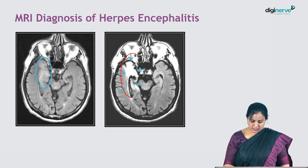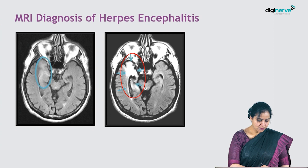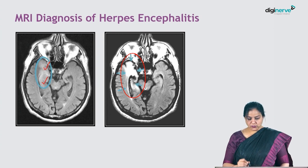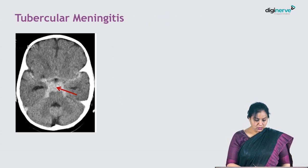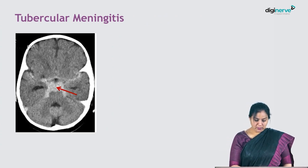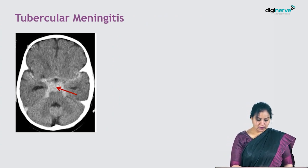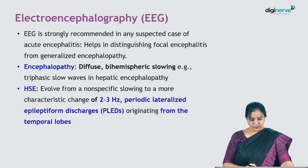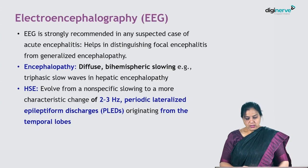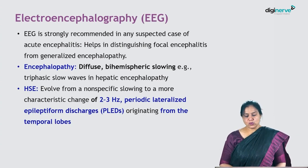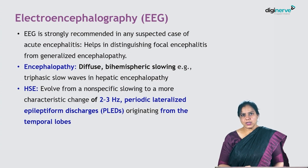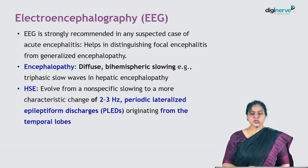This scan shows frontotemporal involvement, which is very characteristic of herpes encephalitis. The next scan is for tubercular meningitis, showing a lot of basal exudates.